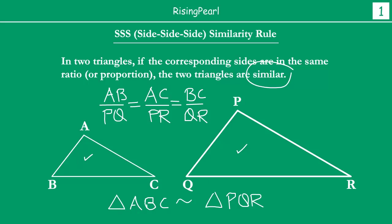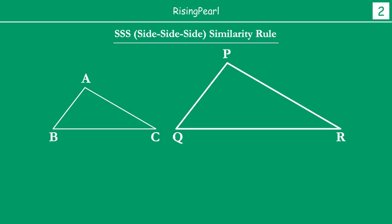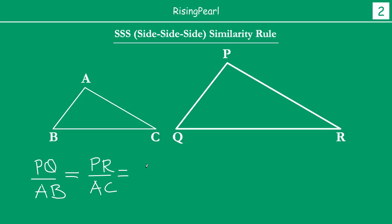Now, how can we prove this? One of the most important things to understand is that it is the ratio which is key. In this figure, we have drawn PQ greater than AB. So we can say PQ by AB is equal to PR by AC, which is equal to QR by BC.